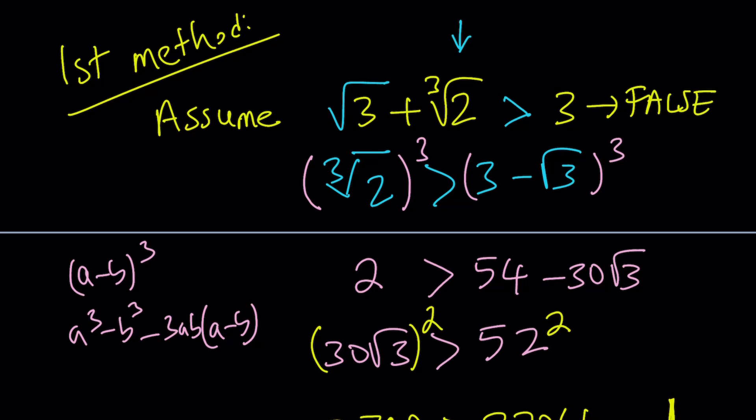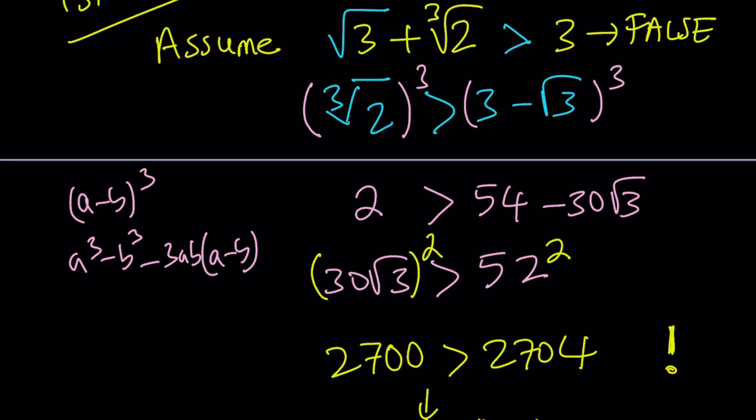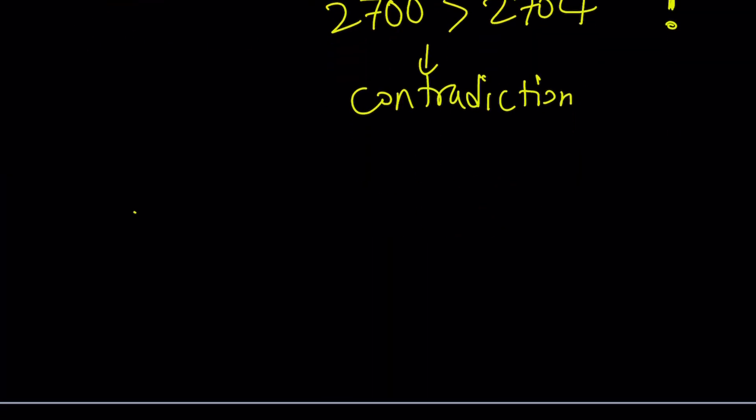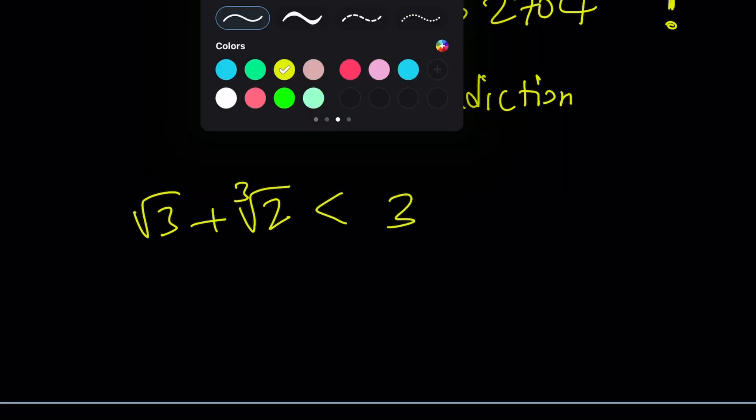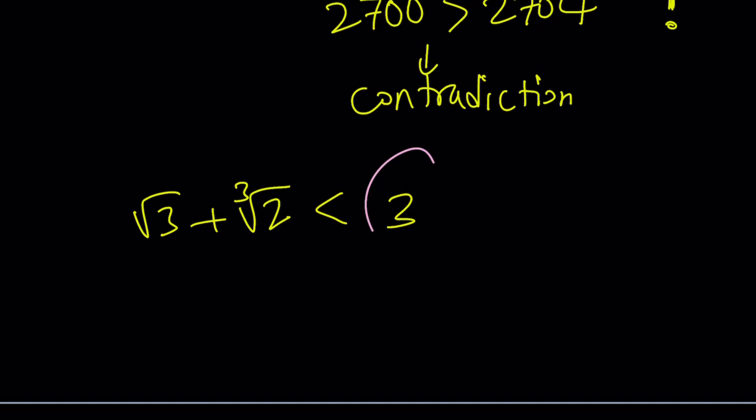So, this assumption is false, meaning that its opposite must be true. Now, obviously, square root of 3 plus cube root of 2 does not equal 3. And you could probably prove that. So, it has to be less, which means square root of 3 plus the cube root of 2 is less than 3. And since we were looking for the larger number, the answer is 3. That is going to be the larger number. Make sense? So far, so good? Let's proceed with the second method.